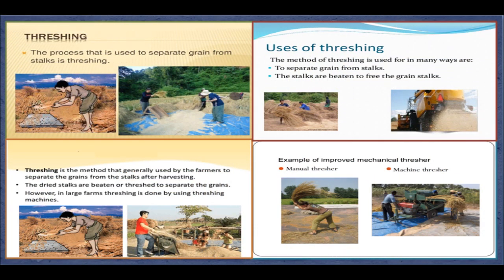Threshing. After harvesting wheat and rice crops, the grains are separated from the stalks by threshing. Threshing is the process of separating grain from harvested stalks. It can be done by manually beating the dry stalks on the ground or a hard surface, trampling under the feet of animals like bullocks, or using a threshing machine.